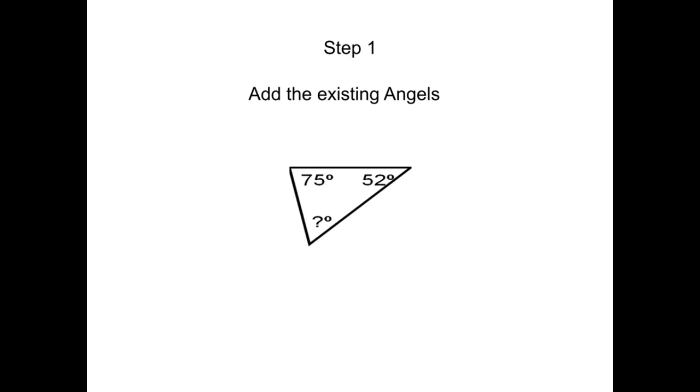Here's an example of 75 degrees and 52 degrees. So if 75 and 52 is 127...